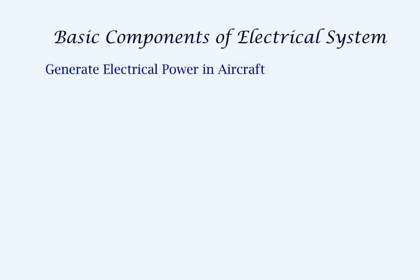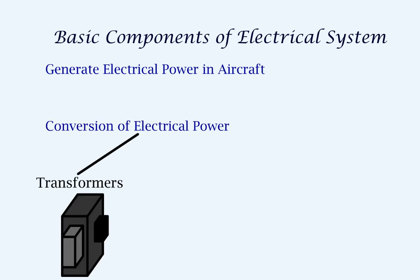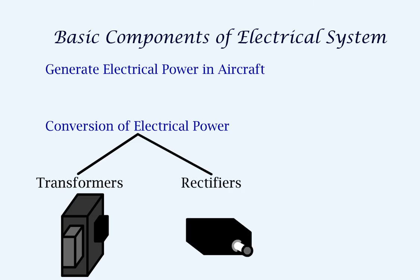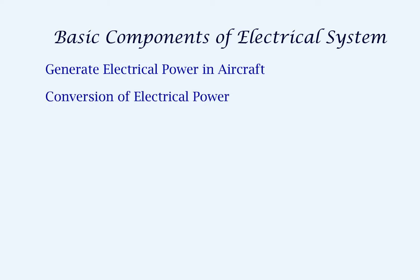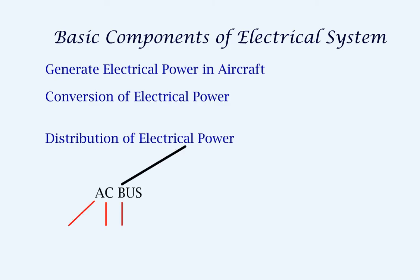The electrical power that is generated needs to be converted as required. This is done using transformers, rectifiers, or inverters. The electrical power has to be distributed to different users or systems and is done using an AC bus or a DC bus.